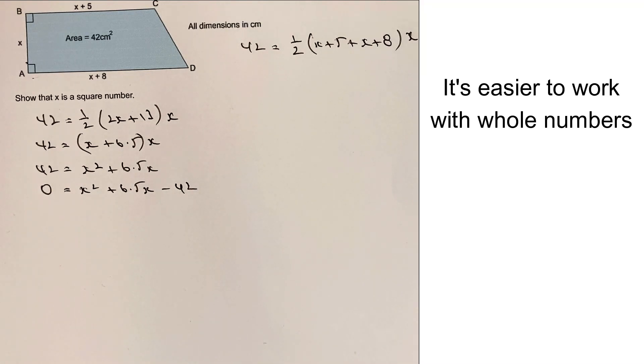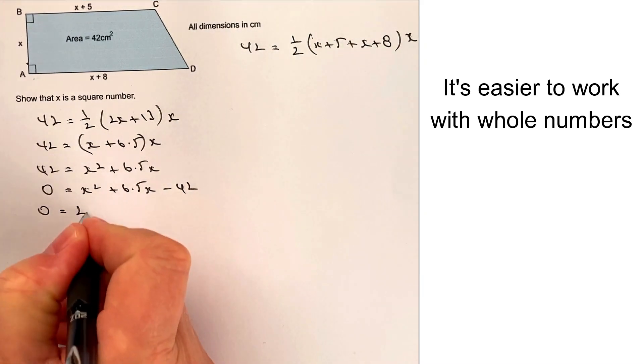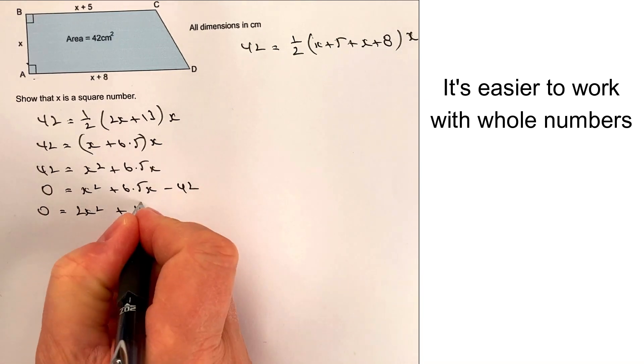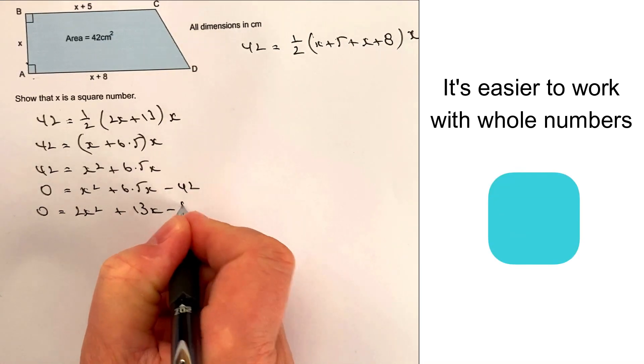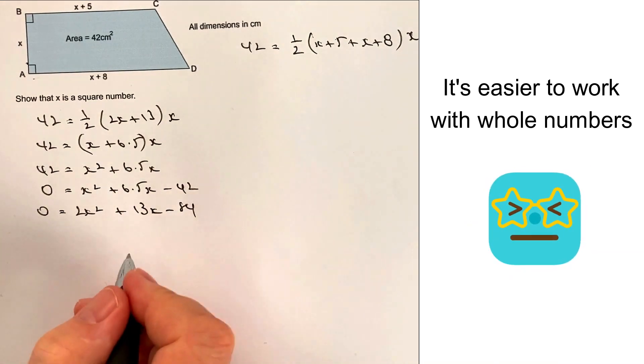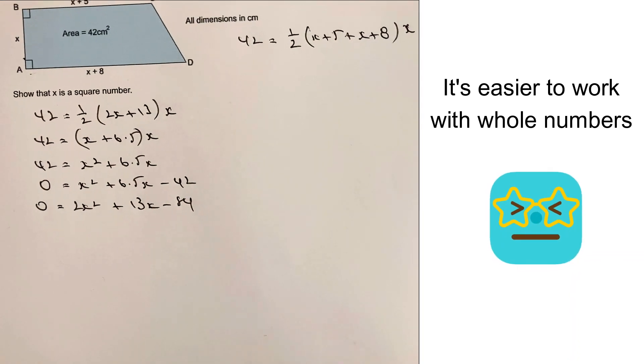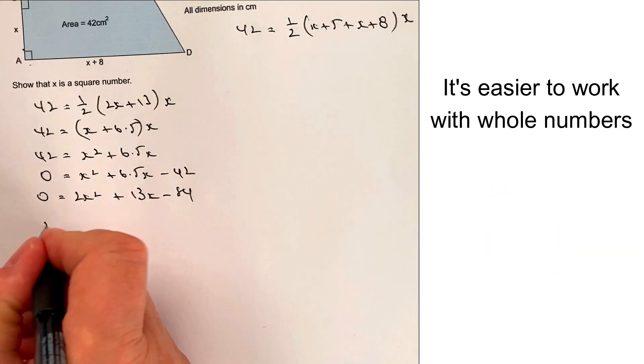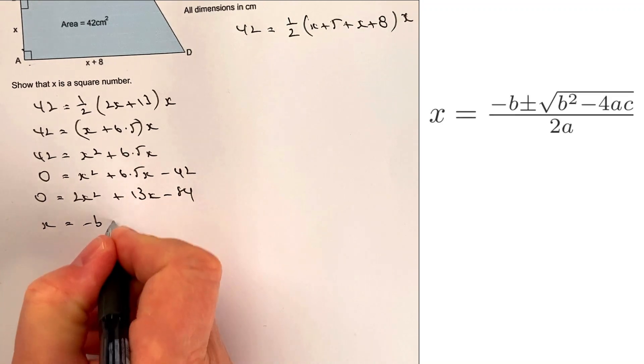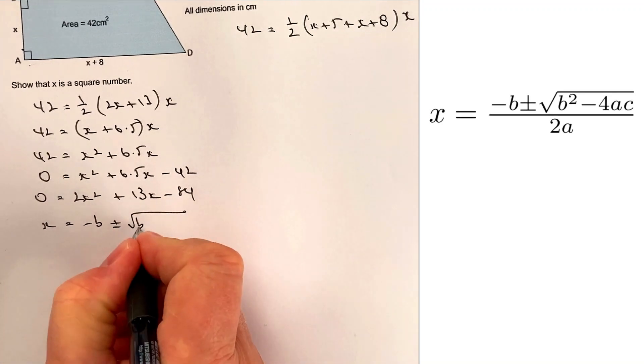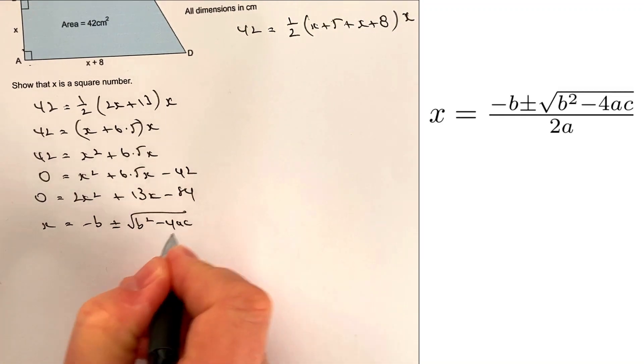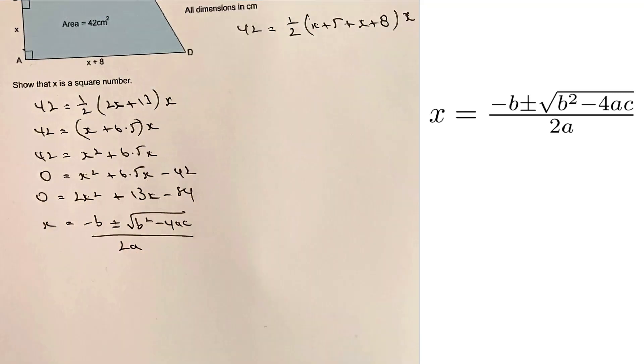Okay, so that's going to give me 0 equals 2x squared plus 13x minus 84. Now, from there, I can write the quadratic formula, which is going to be x equals minus b plus or minus the square root of b squared minus 4ac all divided by 2a.